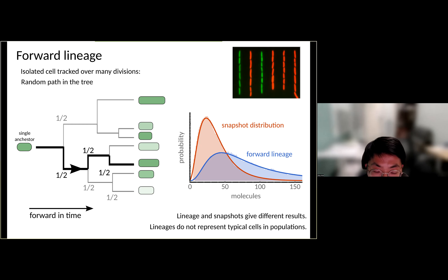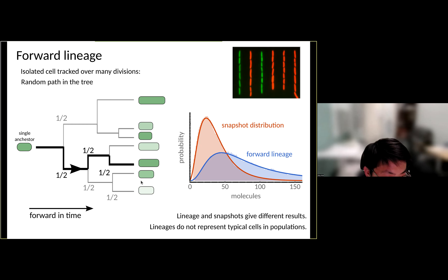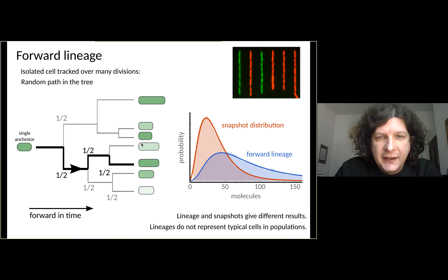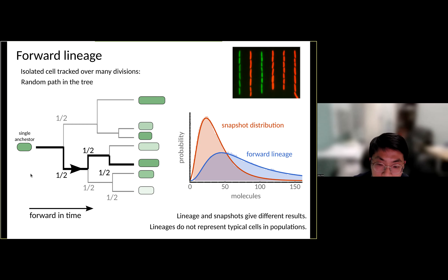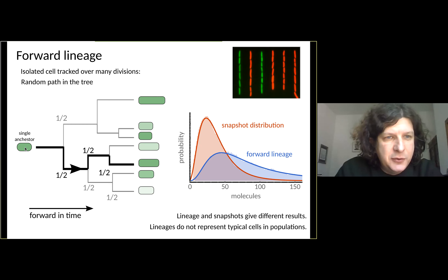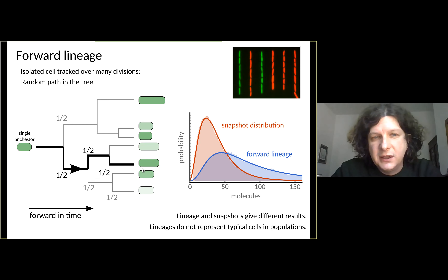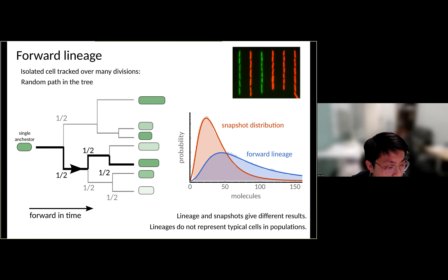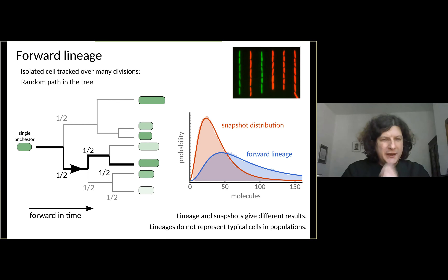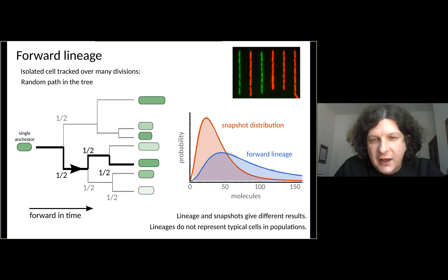The snapshot distribution is the distribution across all cells at the endpoint. The forward lineage has a very different distribution from the snapshot distribution - this was quite striking to us because it means that those lineages do not represent typical cells in the population.